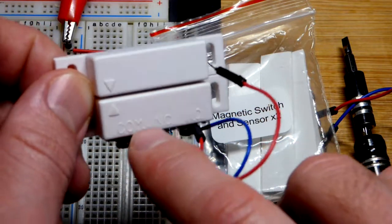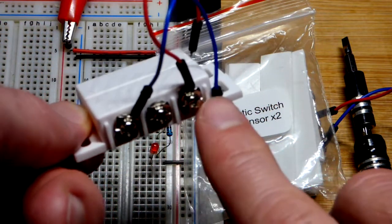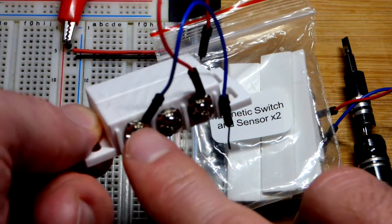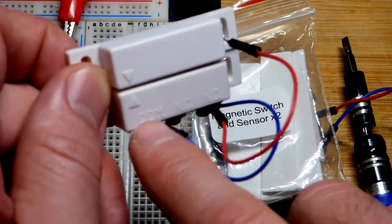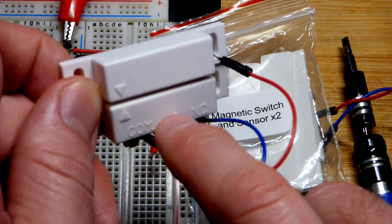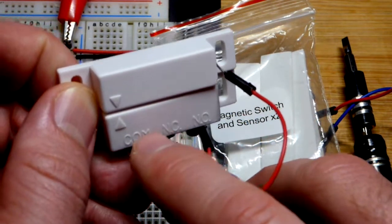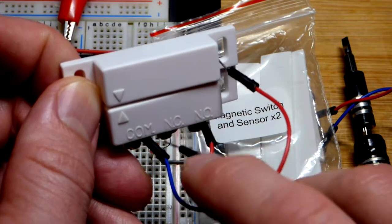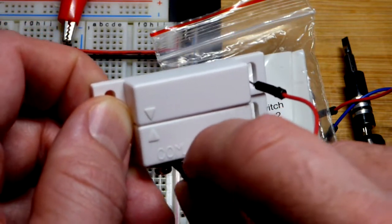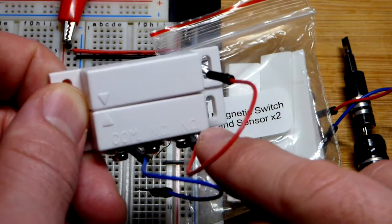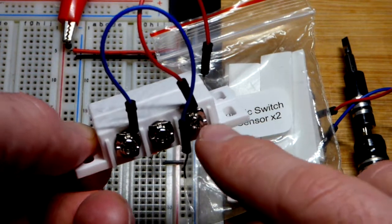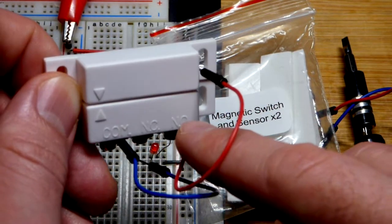But in any case, we have here a switch. There's three screws here and so we have common. The common here is either connected. Right now this is the normal position when the magnet is next to it. And so that's normally closed, it's connected right there. And they do grip really nicely when you screw them down.